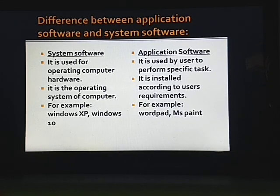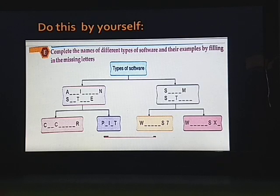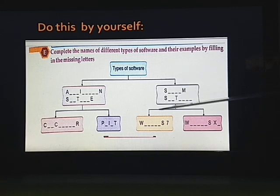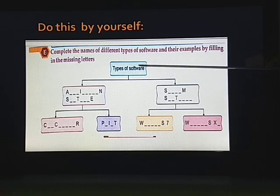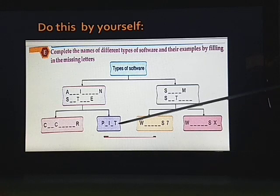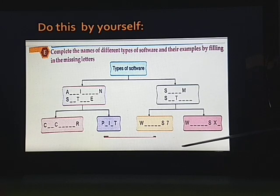In your book, there are many examples given about system software and application software — read and see the pictures in your book. Now, in your book an exercise is given: complete the names of different types of softwares and their examples by filling in the missing letters. Complete this in your book as well as in your classwork copy. Put the heading 'Types of Softwares,' then fill in the blanks for application software and system software, writing the names by referring to your book. This diagram is from your exercise book.